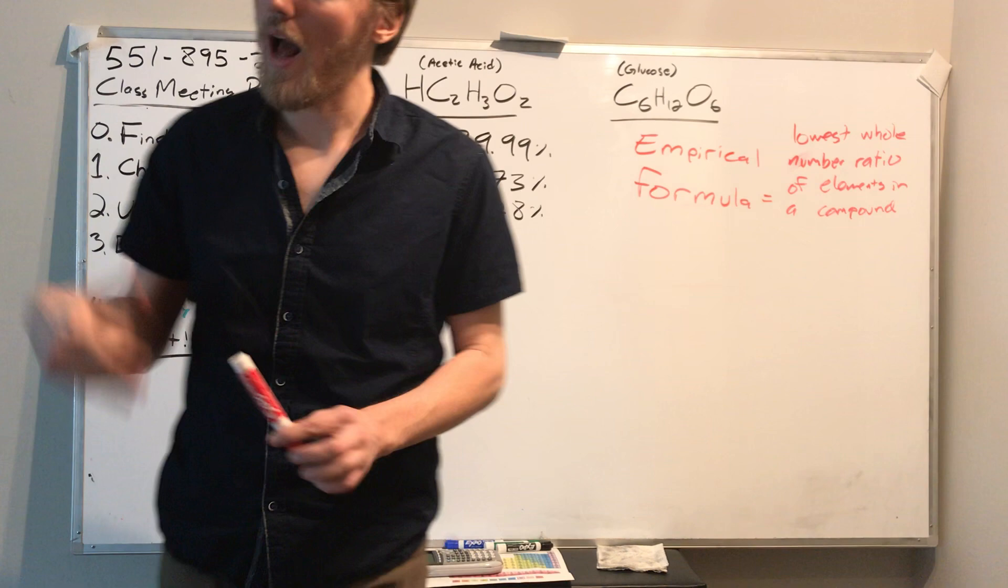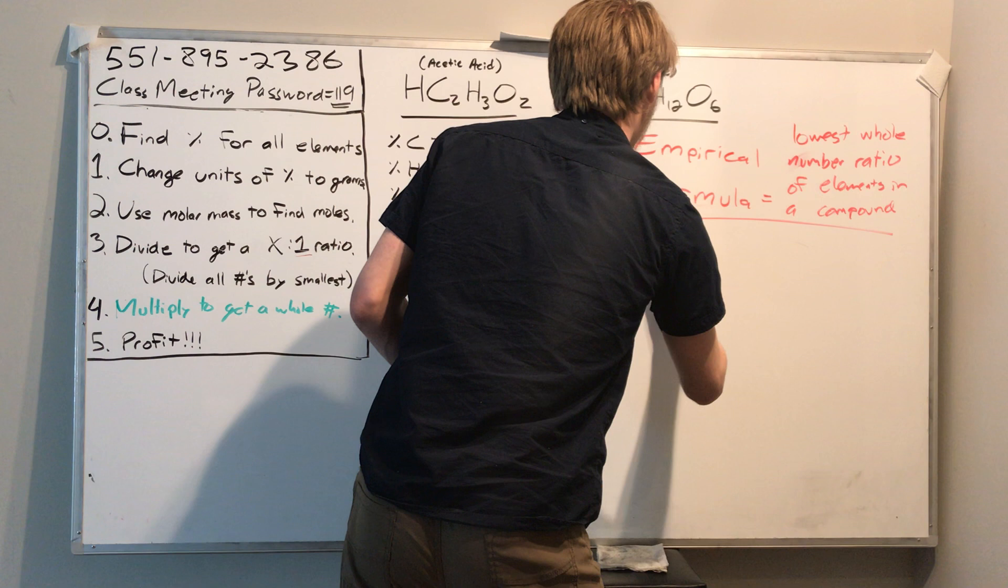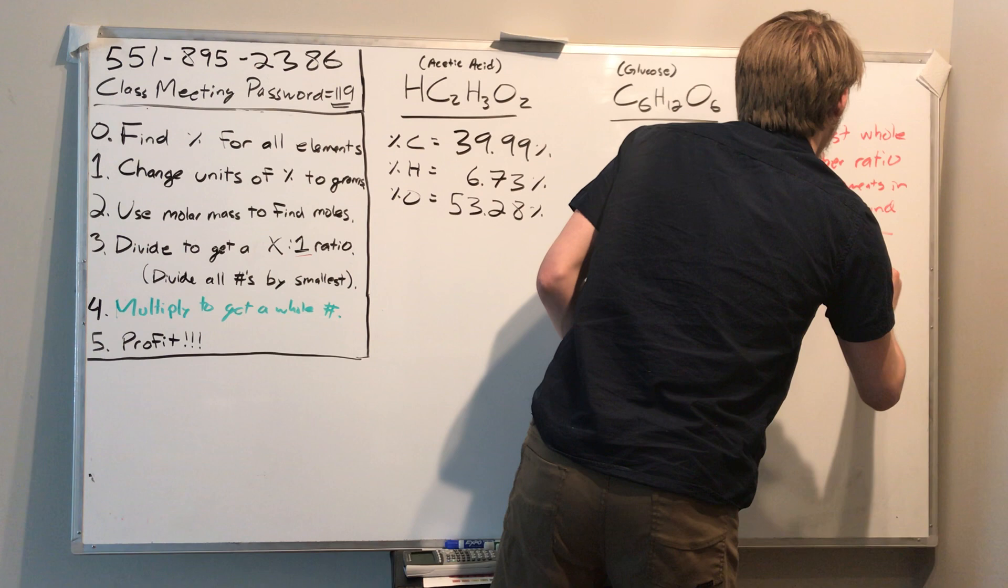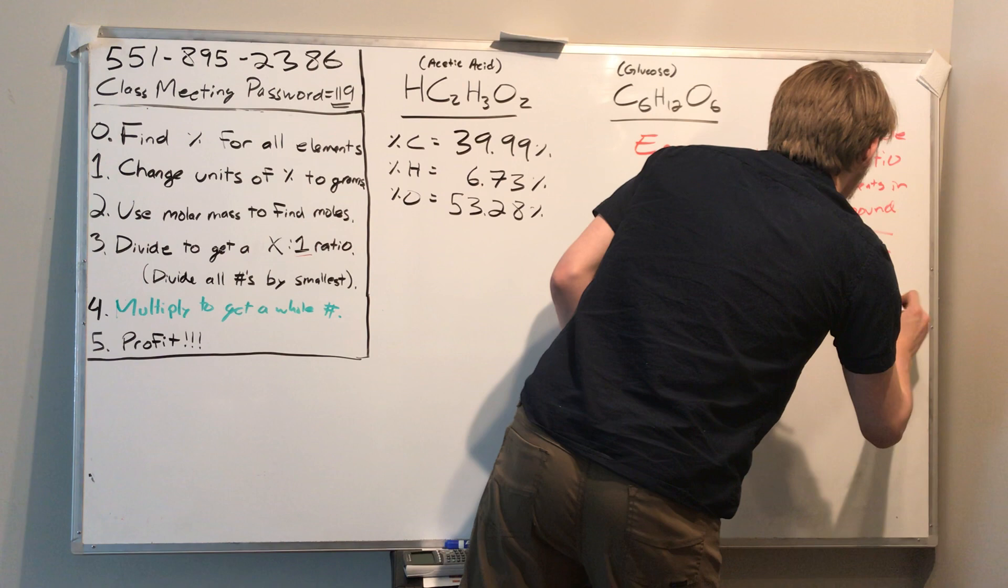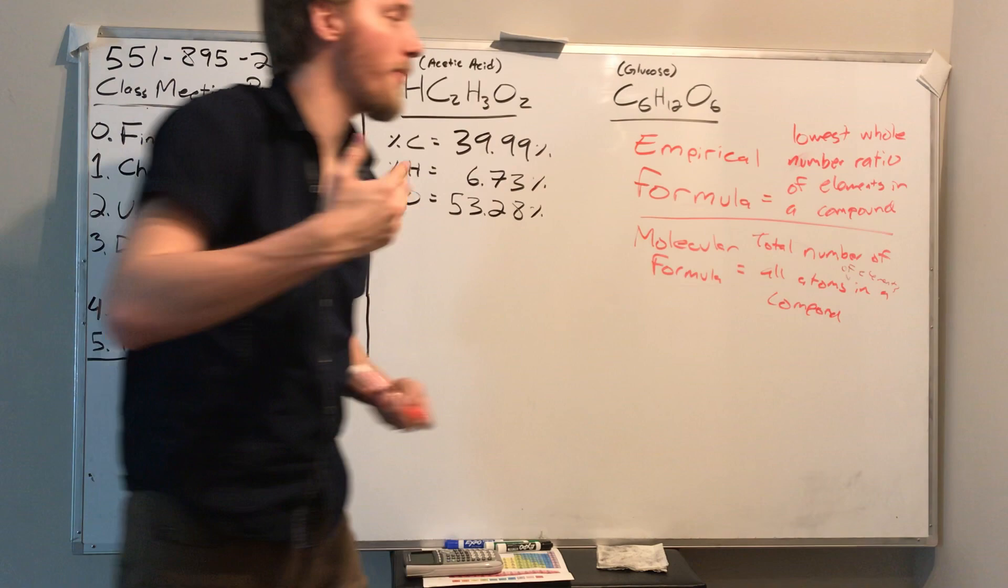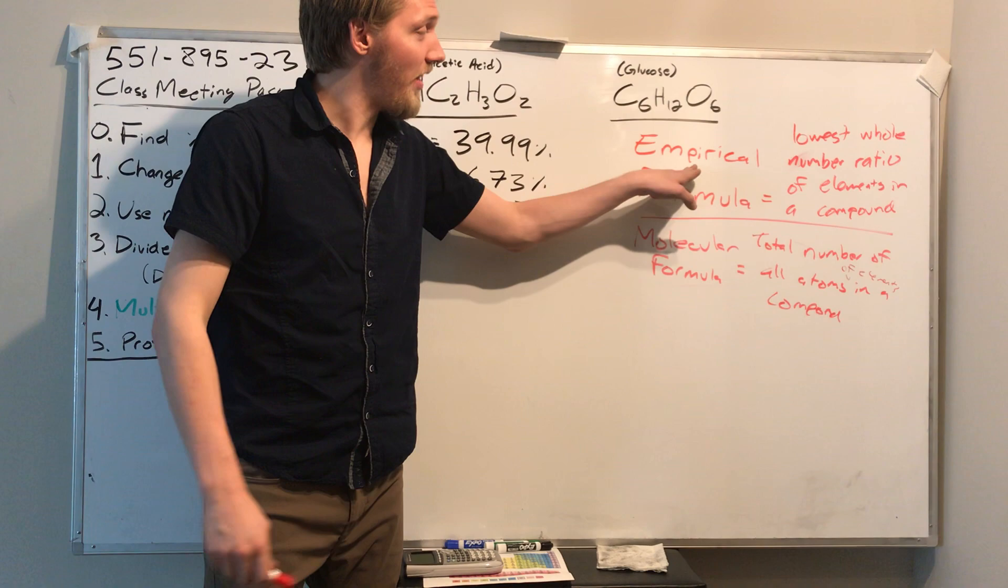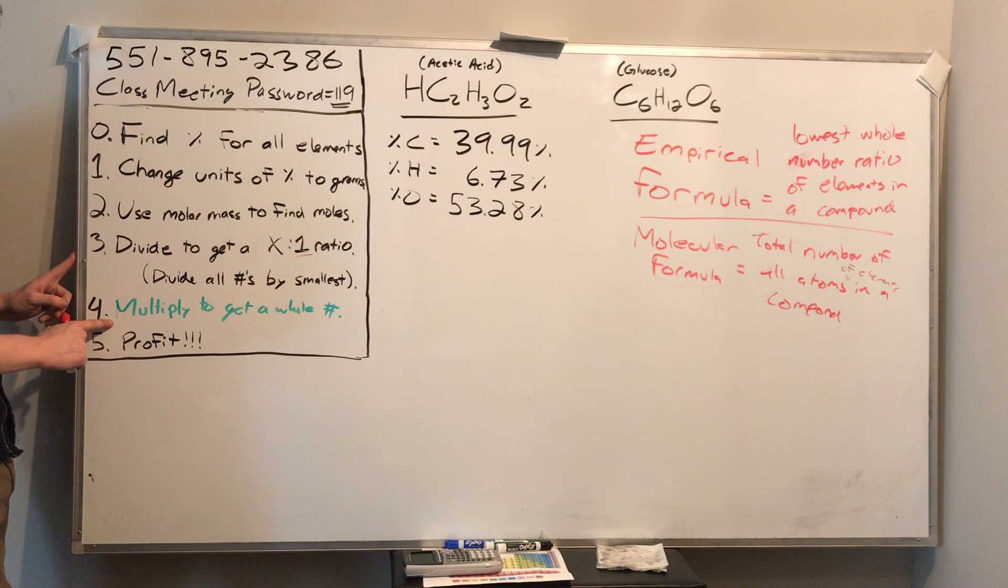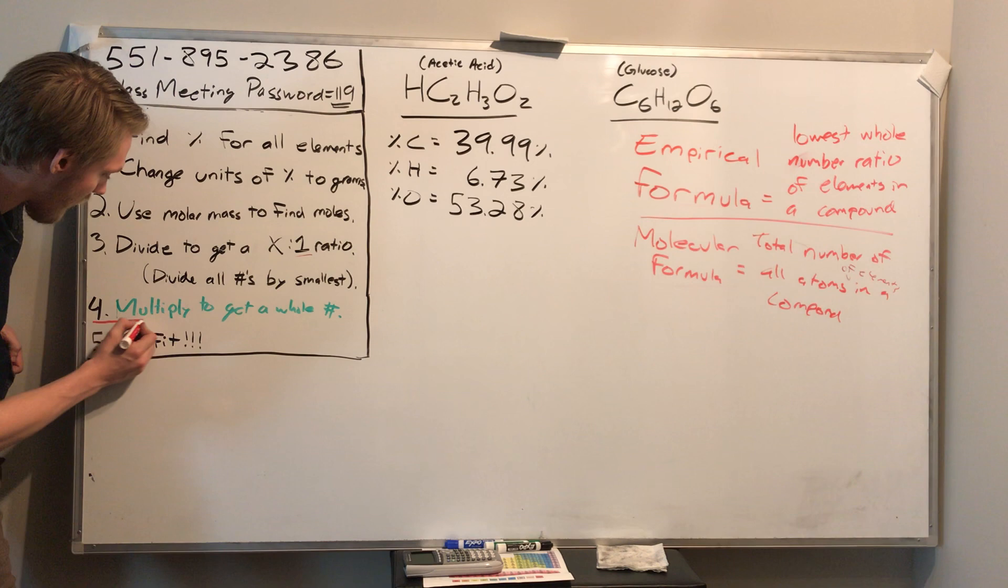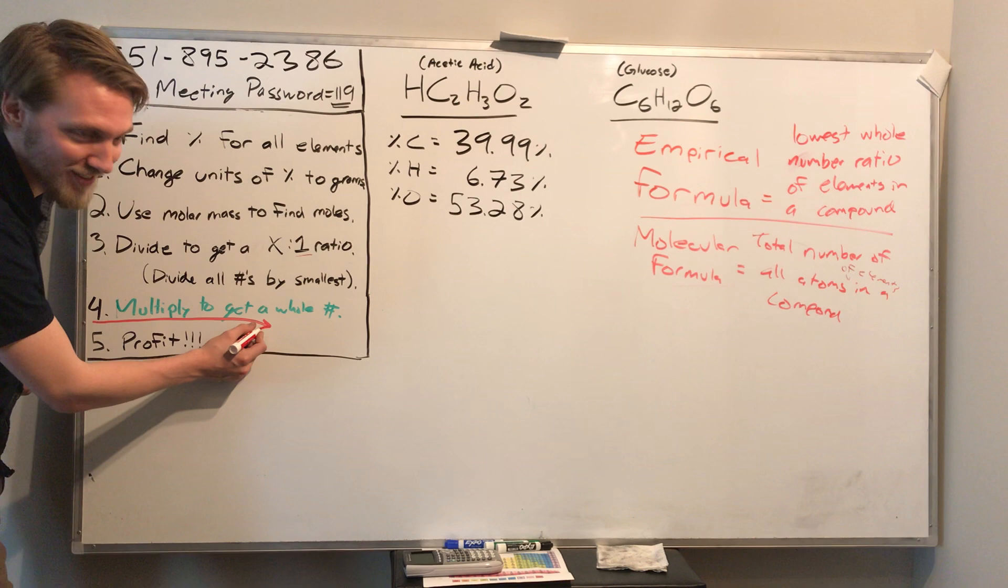That's what an empirical formula is. It is not the total number of all atoms of all the elements in a compound. There's a very slight difference there. The difference is that an empirical formula only gives you the lowest whole number ratio. Well, look what we're doing in this step. We're trying to get something in a small low whole number ratio. That is what these steps will give us. Some people just died. This only gives you an empirical formula.